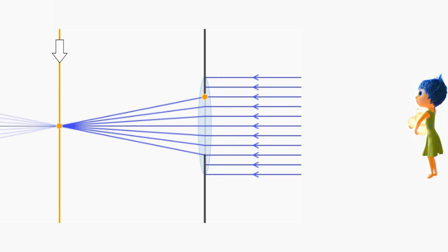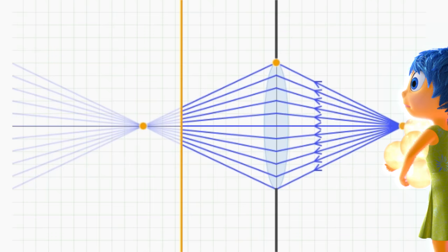But what happens when we try and make an image of nearby objects in our scene? Imagine we move the camera so that Joy is standing just a few feet away. Now pick any point on Joy and look at the light rays that are heading from that point toward the lens of our camera.